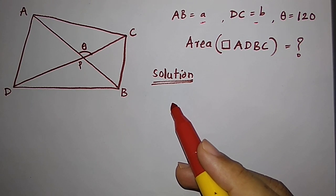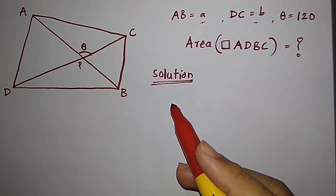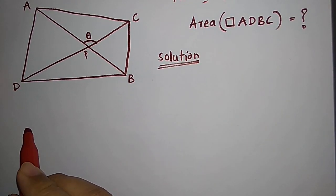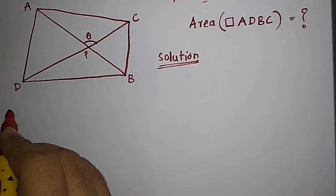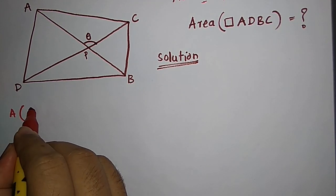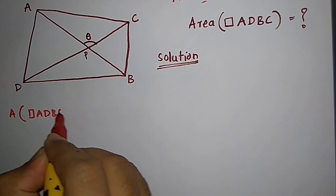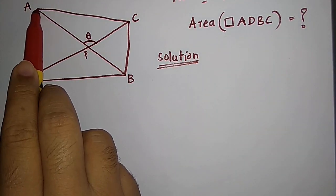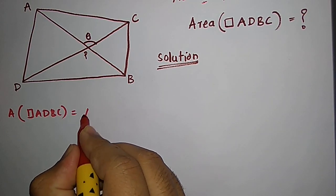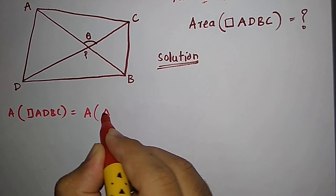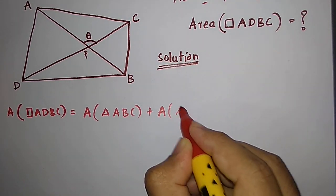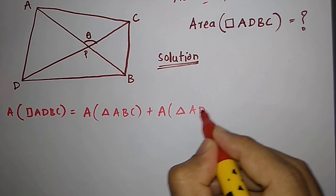So how do we start? We can observe that the area of quadrilateral ADBC is the same as the area of triangle ABC plus the area of triangle ADB — so it is the same as area of triangle ABC plus area of triangle ADC.